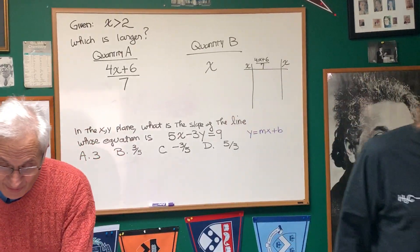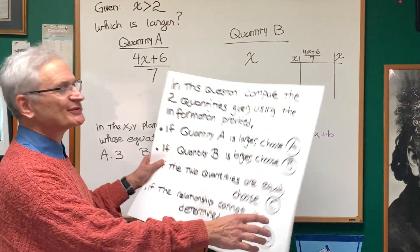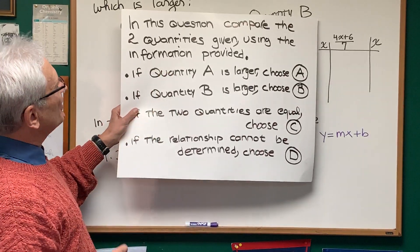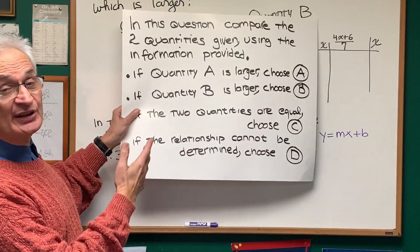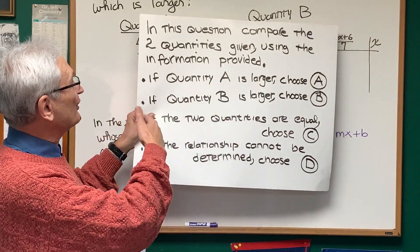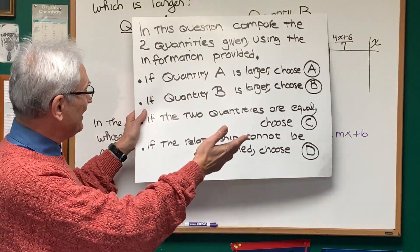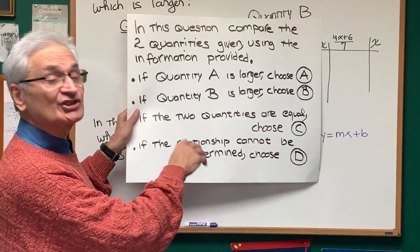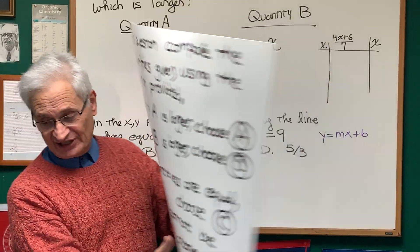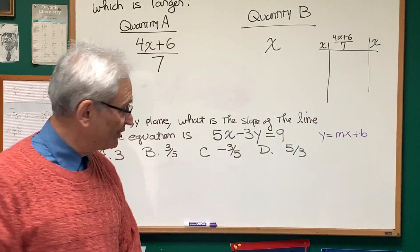Alright Professor, show us what you got. Okay, this is one of these problems that have the following preamble. You've seen this before. In this question, compare the two quantities given using the information provided. If quantity A is larger, choose A. If quantity B is larger, choose B. If the two quantities are equal, choose C. If the relationship cannot be determined, choose D. Okay, so let's look at these two quantities.